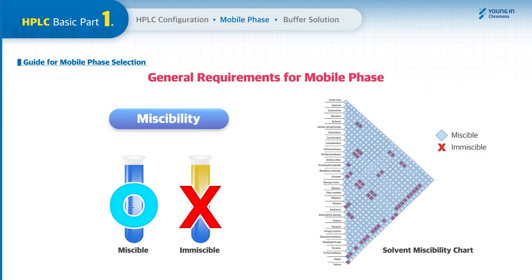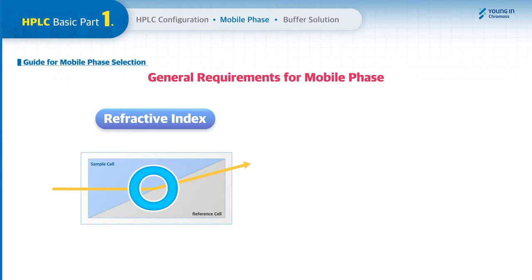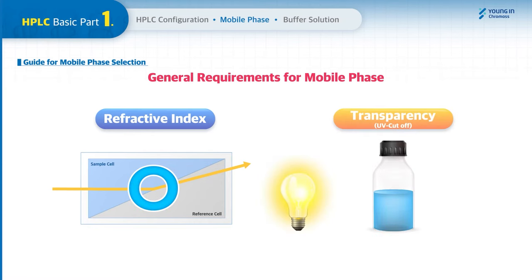There is a solvent miscibility chart you can refer to which shows miscibility between general solvents for HPLC. The refractive index should be considered when using an RI detector — if the RI of the mobile phase is the same as one of the analytes, no detection will occur. The mobile phase without sample must also transmit sufficiently at the wavelength used for detection, which relates to the UV cutoff required for use of a UV detector. The UV cutoff of the mobile phase should be lower than that of the analytes.